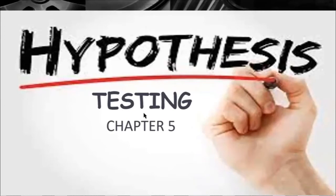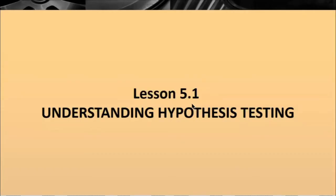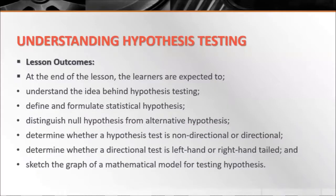Good day everyone. Our lesson this morning is Chapter 5: Hypothesis Testing, Lesson 5.1 about understanding hypothesis testing. The learning outcomes: At the end of the lesson, learners are expected to understand the idea behind hypothesis testing, define and formulate statistical hypotheses, distinguish null from alternative hypothesis, determine whether a hypothesis test is non-directional or directional, determine whether a directional test is left-hand or right-hand tail, and sketch the graph of a mathematical model for hypothesis testing.